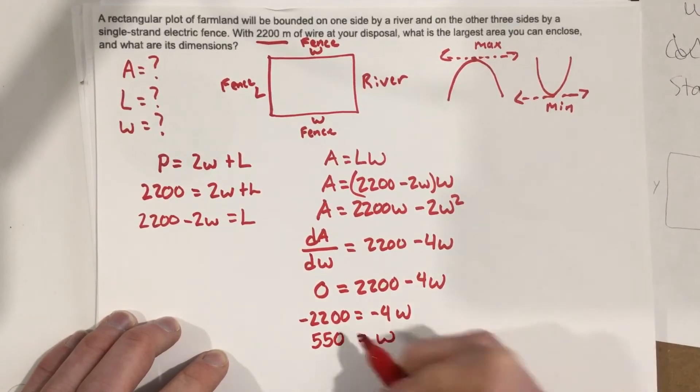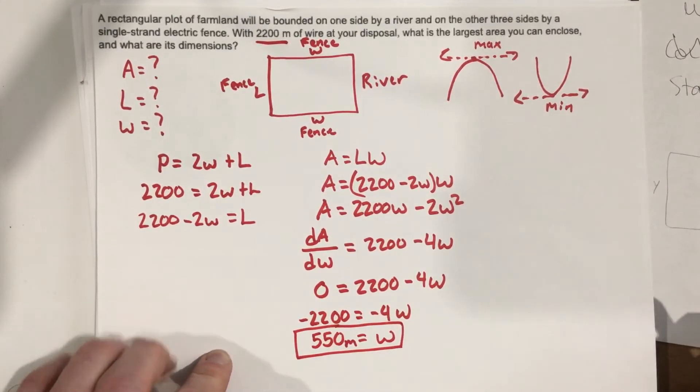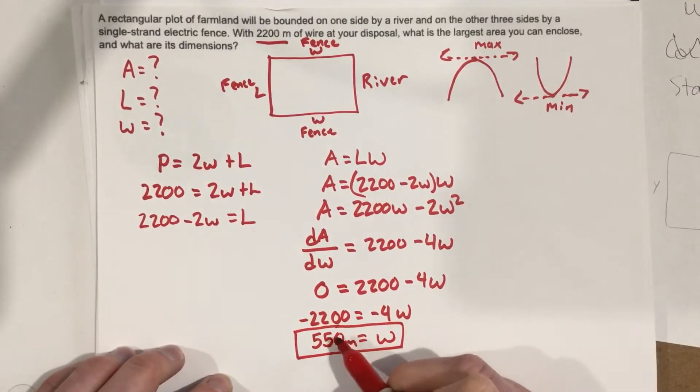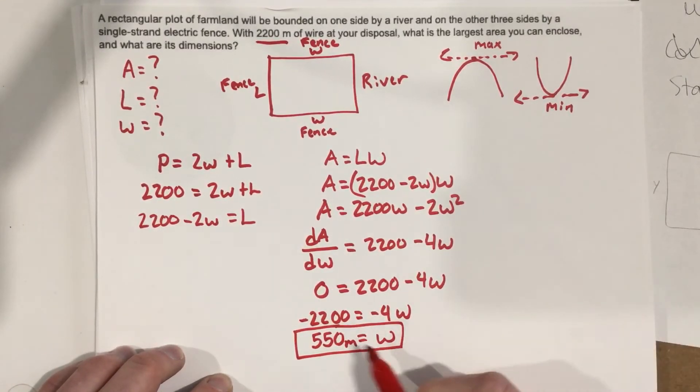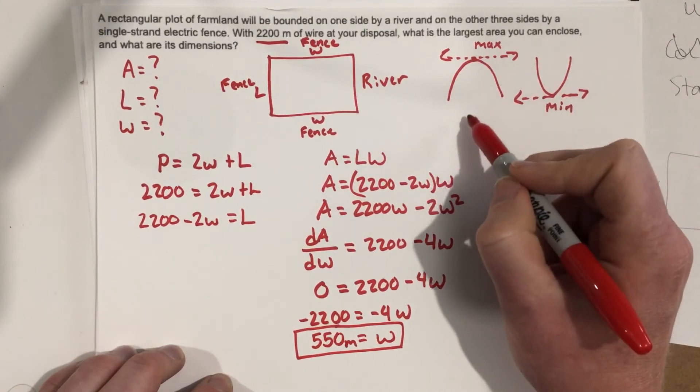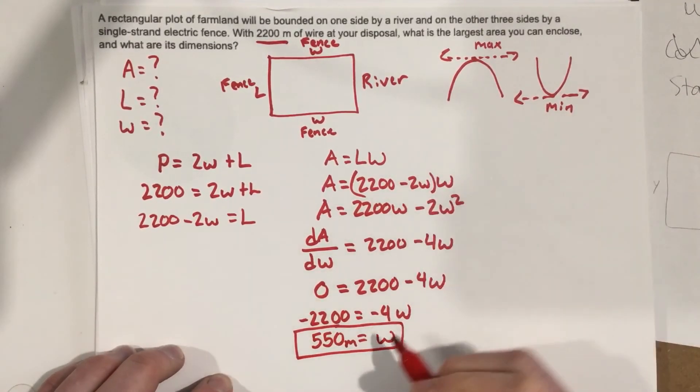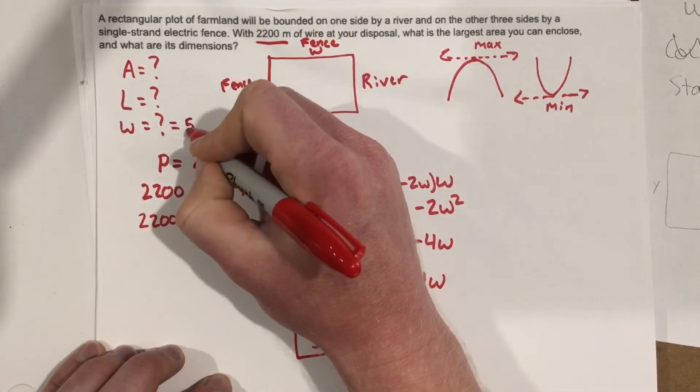So, our width, our maximum width, is 550 meters. That's the width that's going to help maximize our area. So, this is the, if you want to think about our x value, this is the x value of our coordinate. So, I can go up here and say that that is actually equal to 550 meters.